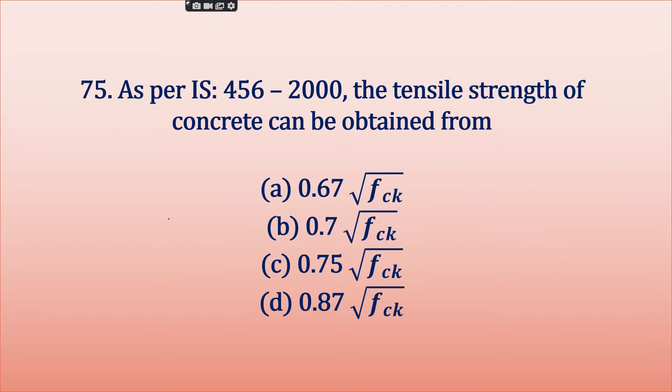As per IS 456-2000, the tensile strength of concrete can be obtained from tensile strength, and we say that modulus of rupture. We denote this by fcr equals 0.7 root over fck.